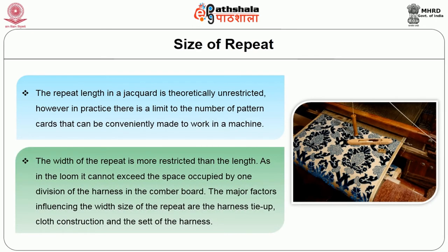The width of the repeat is more restricted than the length, as it cannot exceed the space occupied by one division of the harness in the comber board. The major factors influencing the width sizes of the repeat are the harness tie-up, cloth construction, and the set of the harness. For example, assume the cloth contracts around 12 percent from the reed width on finishing. A 400-hook tie with 40 harness ends per centimeter will give 400 ÷ (40 − 12%) = approximately 8.8 cm width of the design repeat in the finished cloth.